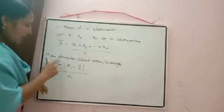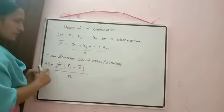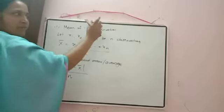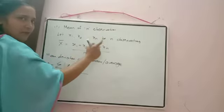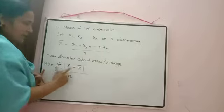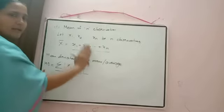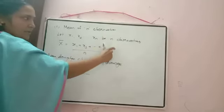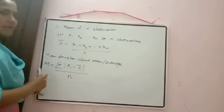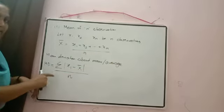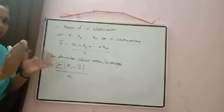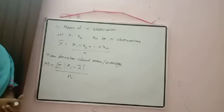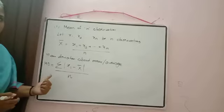To calculate mean deviation about mean: first calculate the mean, then find the difference between each value and the mean. We take the modulus sign, so the difference will be positive only — don't take the negative sign. Whatever difference is coming, add all the differences and divide by n to get the mean deviation. Mean deviation gives how much each value deviates from the mean, and then we calculate the average.